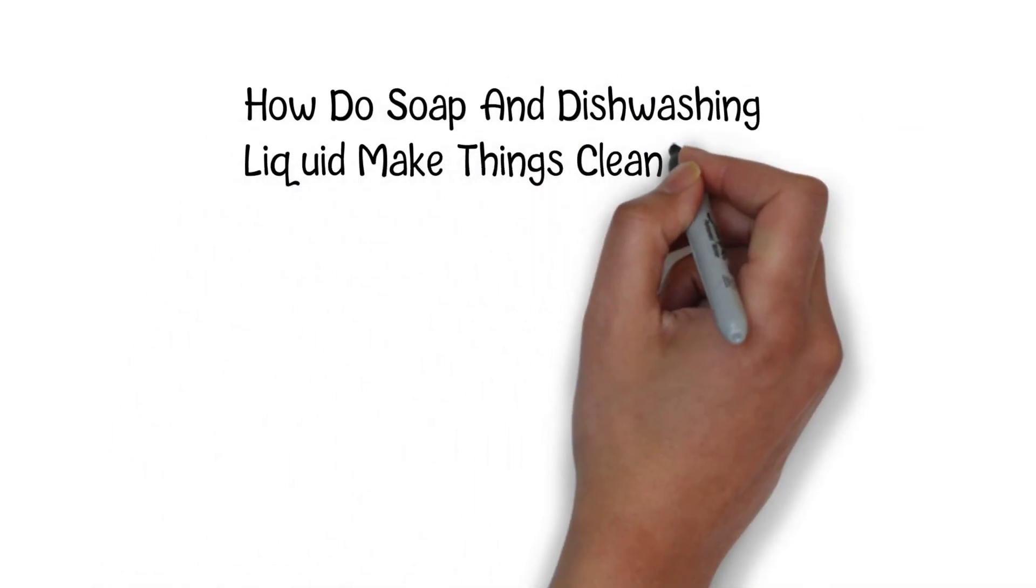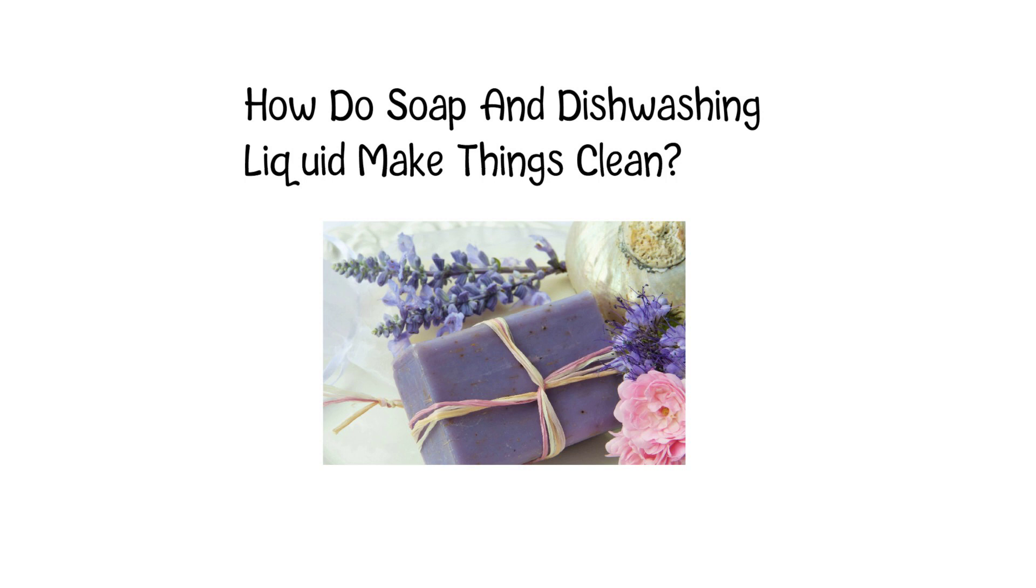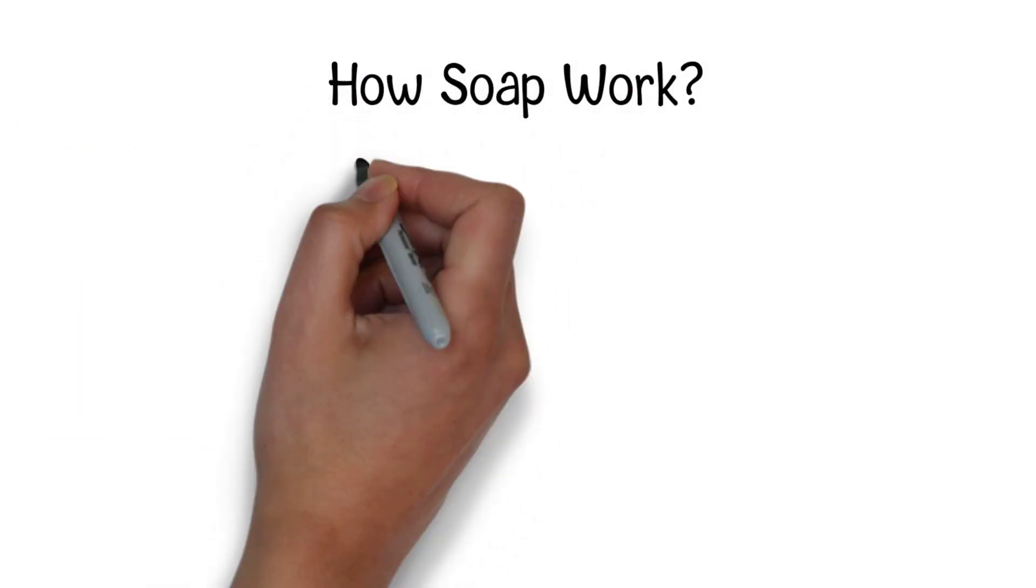How do soap and dishwashing liquid make things clean? Soap is an effective cleaning agent because of its unique chemical properties.